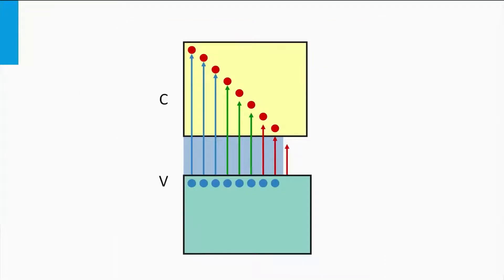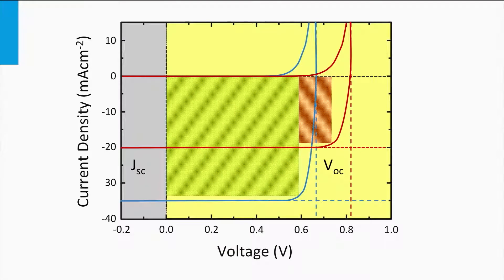If we now consider an absorber material with a lower band gap, we see that more photons in the spectrum can excite charge carriers, and this material will result in large short circuit current densities. However, due to the smaller band gap, the splitting of the quasi-Fermi levels and the resulting open circuit voltage will become smaller. This is reflected in the blue JV curve, which has a larger short circuit current density whereas the open circuit voltage is smaller. An important conclusion is that the choice of semiconductor material determines the open circuit voltage and the short circuit current density through its band gap.